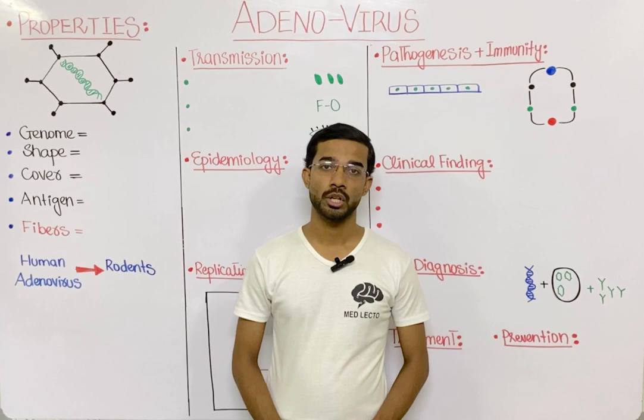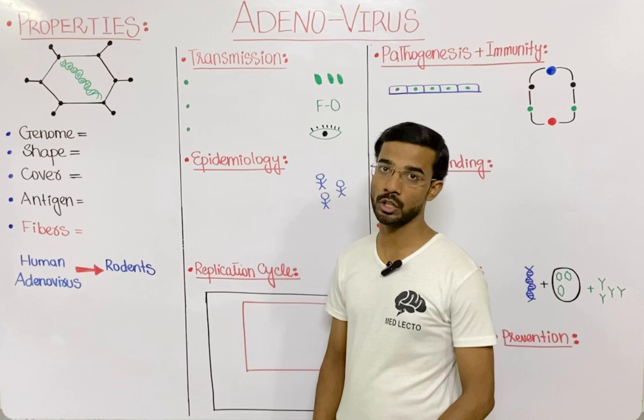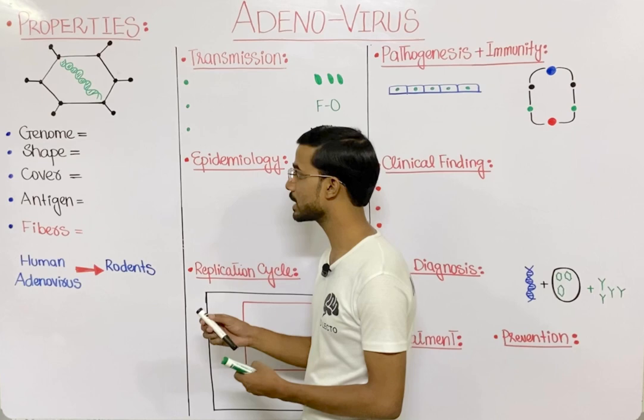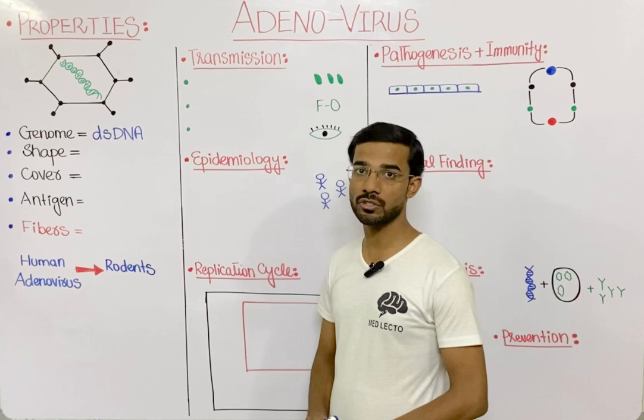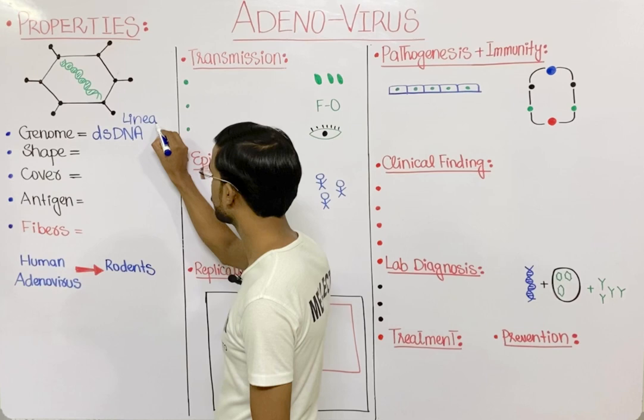First of all we will discuss the general properties of the adenovirus. The first one is the genome. The genome of the adenovirus is basically double-stranded DNA, and the shape of the double-stranded DNA is linear.